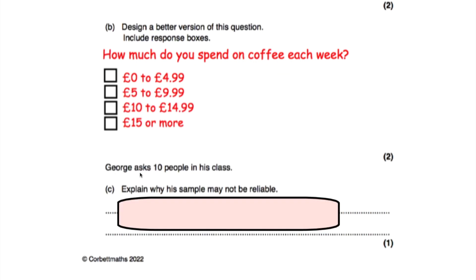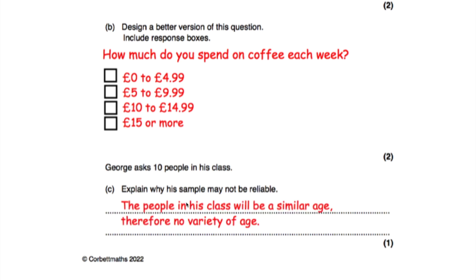Part C tells us George asked 10 people in his class and asks us to explain why this sample may not be reliable. The 10 people are all the same age — all in his class. The fact that all people in his class would be a similar age means there's no variety of age. For instance, younger people may not drink as much coffee as someone older. So his sample may not be reliable because it doesn't include a range of ages.